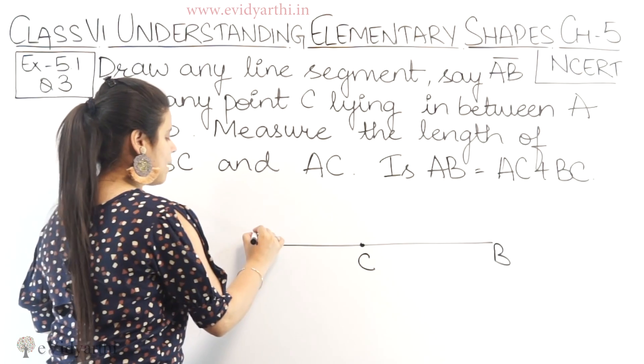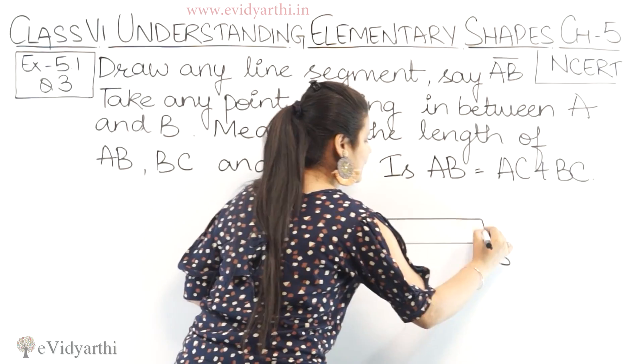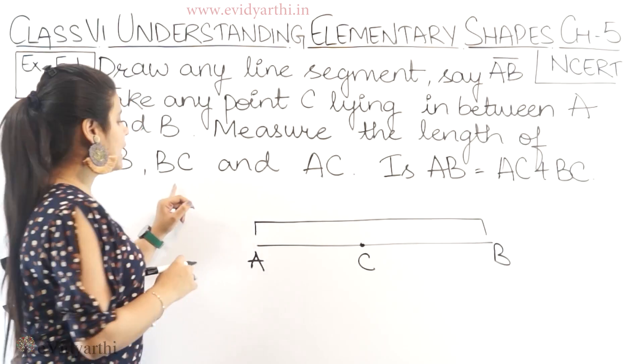Then what do you have to do? Let's look at AB's length. Now you have to measure that AB's length is how many. You have to measure the length of the line. Then you will measure BC.